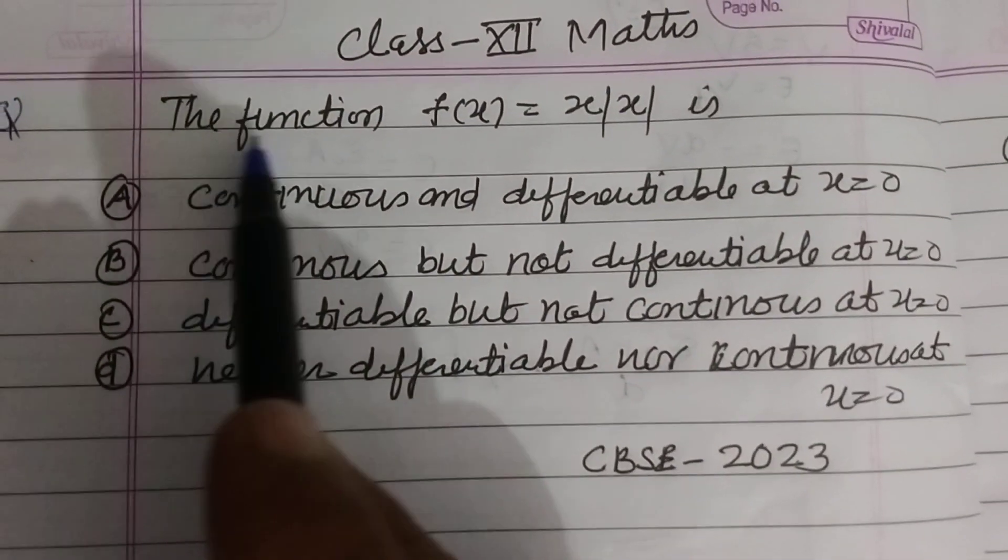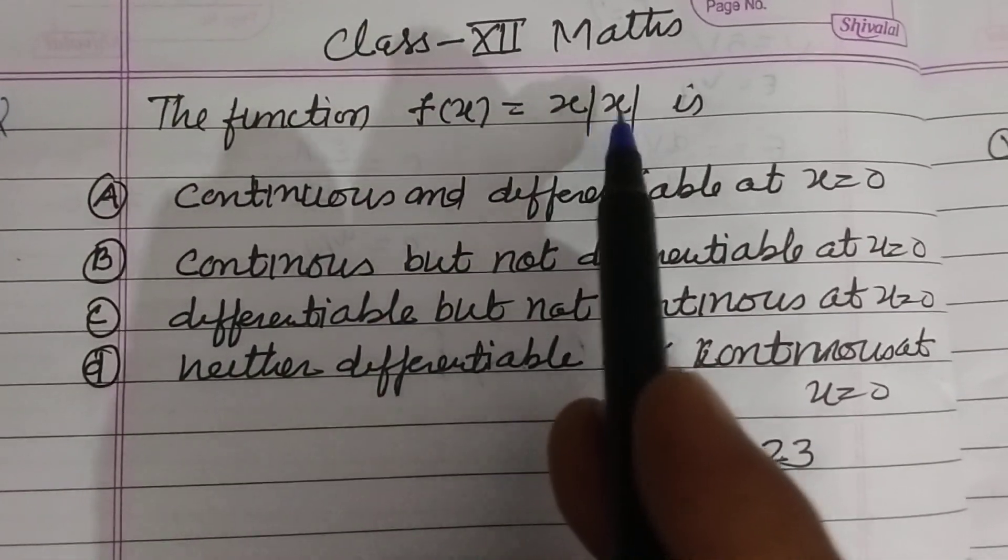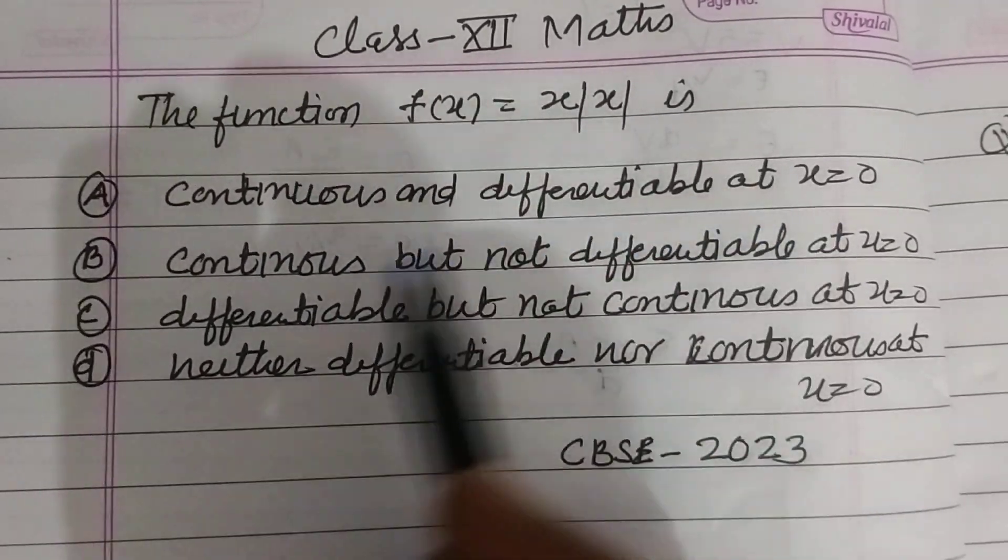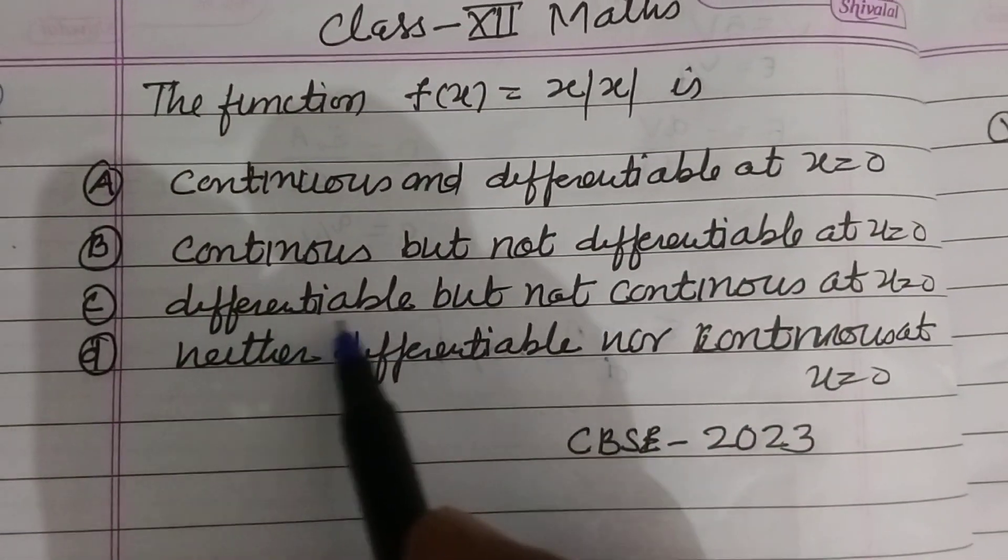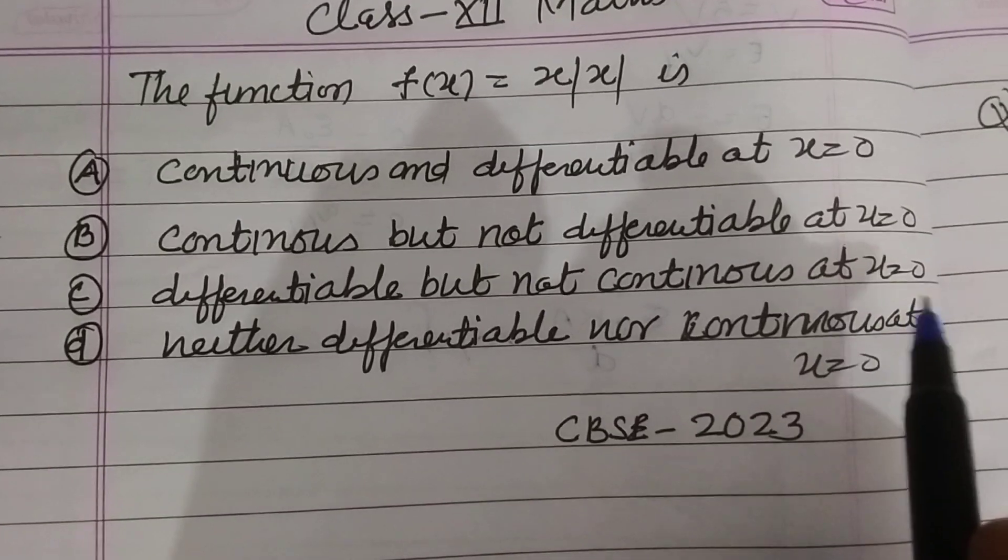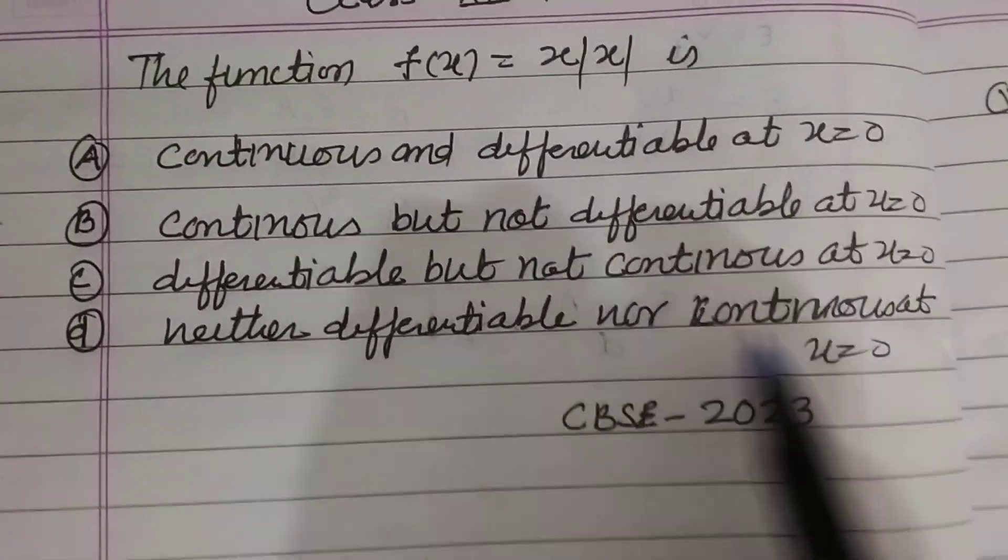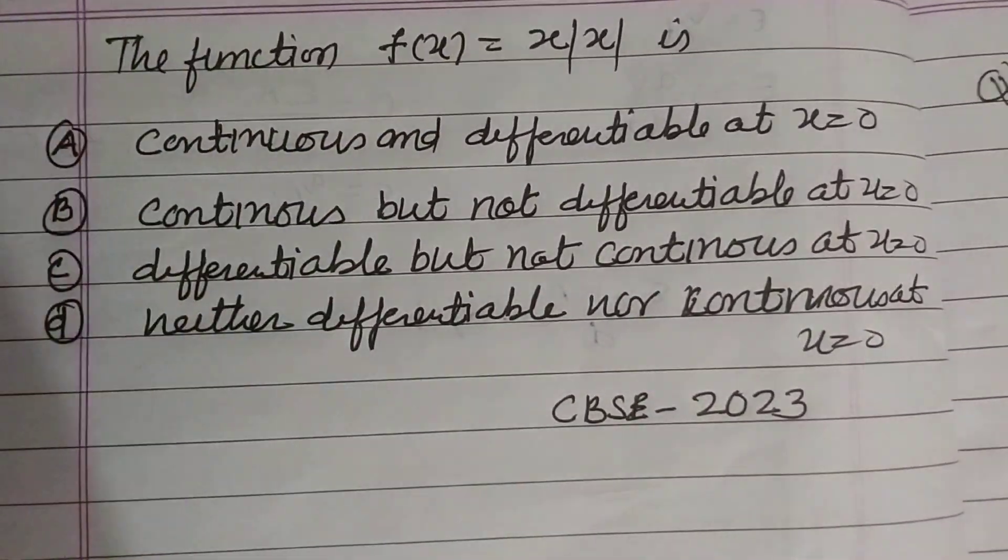Question is: the function f is continuous and differentiable at x equal to 0, continuous but not differentiable at x equal to 0, differentiable but not continuous at x equal to 0, neither differentiable nor continuous at x equal to 0.